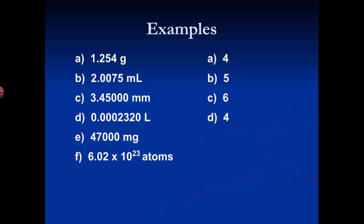E: 47,000 milligrams. The 4 and the 7 are significant, but those zeros are at the end of the number on the left side of the decimal point, so according to rule five they're not significant — only the 4 and 7. Finally, F: 6.02 × 10²³ atoms — Avogadro's number, very important in chemistry. For scientific notation, we ignore the exponent since it's just a placeholder. So we only look at 6.02. The 6 and 2 are significant by rule one, and the zero between them is also significant. This has three significant figures.